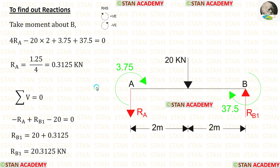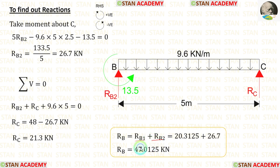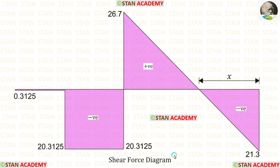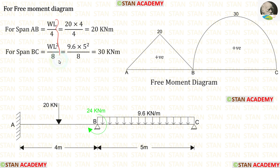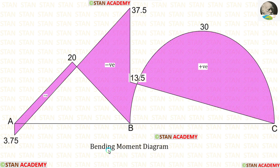Now let us find the vertical reactions. First, in span AB: taking moments about B gives R_A, and applying equilibrium gives R_B1. In span BC: taking moments about C gives R_B2, and equilibrium gives R_C. Adding R_B1 and R_B2 gives R_B. Using these values, the shear force diagram has been drawn. Using the appropriate formulas, we can draw the free moment diagram, and using the direction of moments, the end moment diagram. Combining both diagrams gives the bending moment diagram.